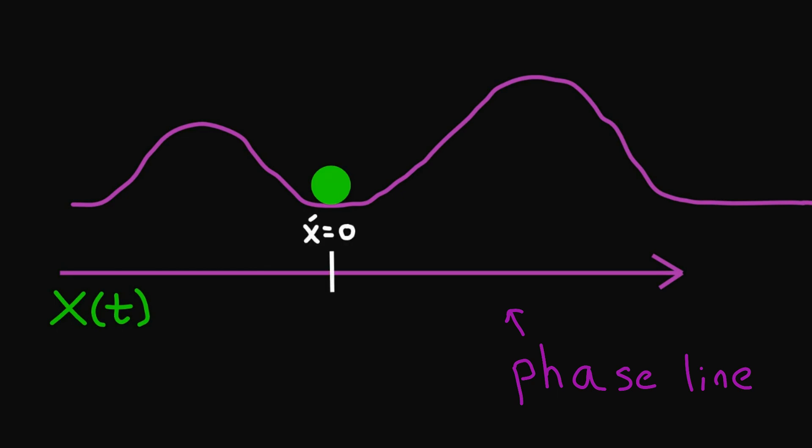Notice that at the bottom of the hill, the ball doesn't move, hence x of t is constant and x prime of t is equal to zero. We call this an equilibrium point. Now let's imagine pushing the ball up the left hill and releasing it. We see that the ball initially rolls to the right and settles back down at the bottom of the hill. The ball rolling to the right means x of t is increasing, hence x prime of t is greater than zero.